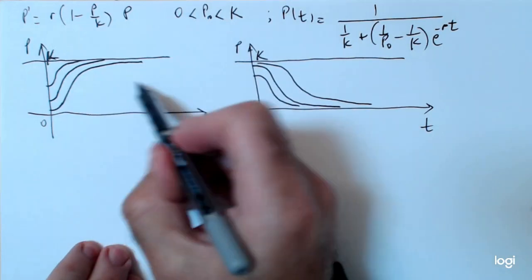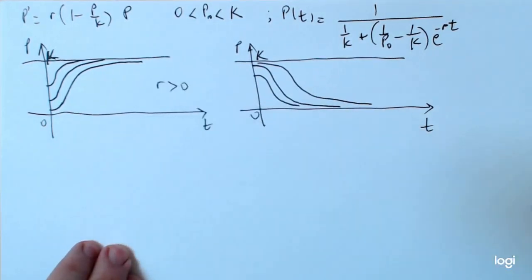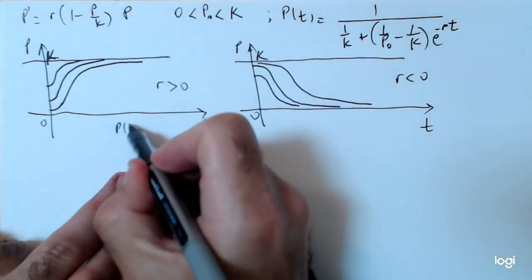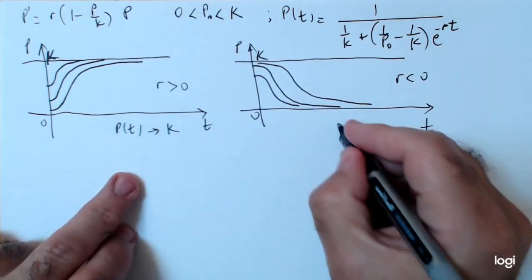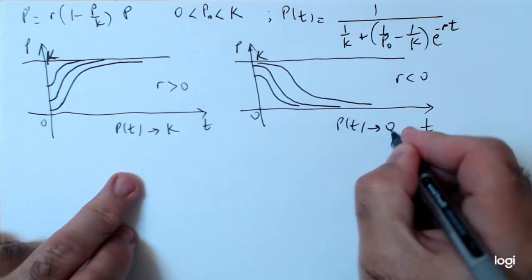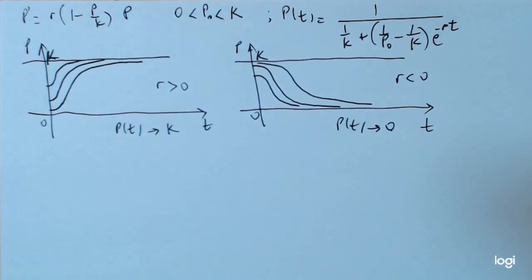This behavior here I have on the left side is if r is greater than 0, and this is if r is less than 0, as we mentioned before. So, in this case, p of t goes to k, p of t goes to 0. So this is how the graph looks like of the logistic equation solution between 0 and k.